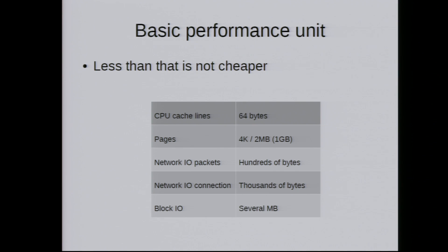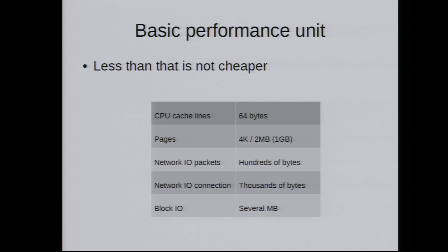Back to the mental model. An important concept is your basic performance unit: the minimum granularity below which things don't get faster. For cache, that's typically 64 bytes. For paging, it's usually 4K, but increasingly 2 megabytes. For network I/O, at least hundreds of bytes per packet, or thousands for TCP. For block I/O, it's getting larger — it's not any faster to read 512 bytes versus 2 megabytes in many modern I/O subsystems. If you're doing things in smaller chunks than the minimum performance unit, you're wasting time, so clustering data can be really useful.